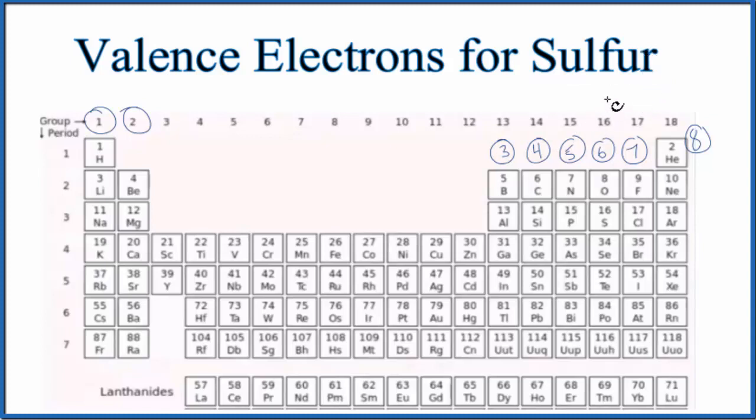There are two ways we can find the number of valence electrons for sulfur. First, use the periodic table. Here's sulfur. Sulfur is in group 16, sometimes called 6A. Elements in group 16, like oxygen and sulfur, have 6 valence electrons.